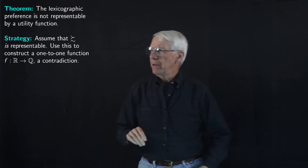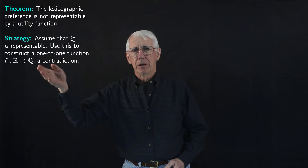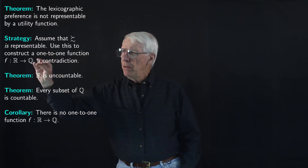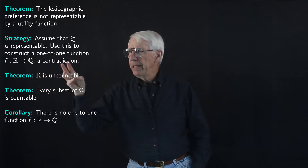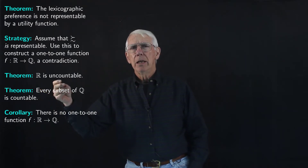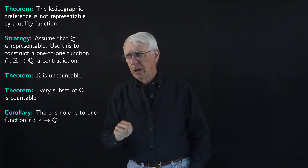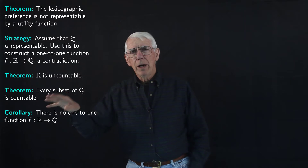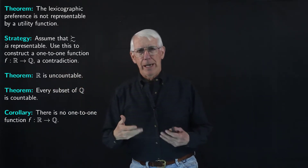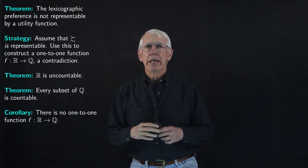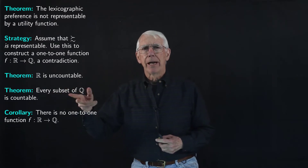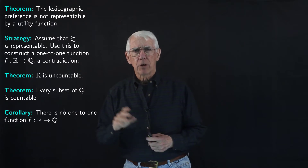How is it that obtaining a one-to-one function from the reals to the rationals is a contradiction? That's because of two theorems and their corollary. The first theorem says the reals are not countable. The second says every set of rationals is countable. Together, these give the corollary that there is no one-to-one function from the reals into the rationals. We're going to take those two theorems and the corollary for granted, although I do expect to do a subsequent lecture on countability, uncountability, and cardinality of sets.